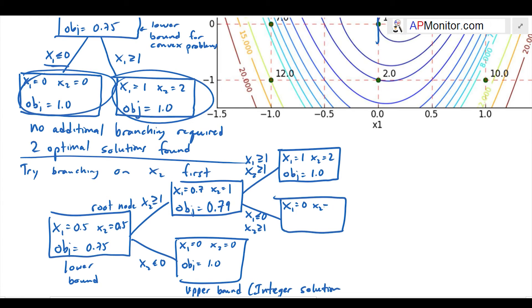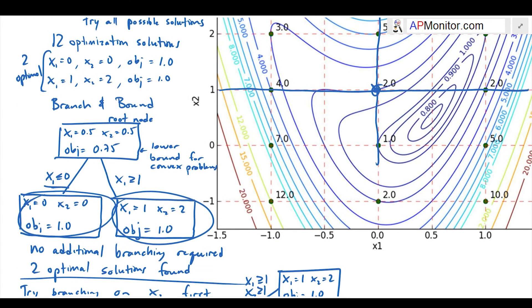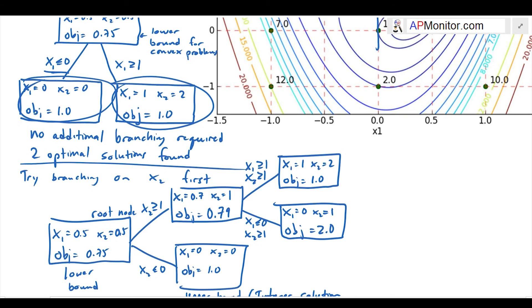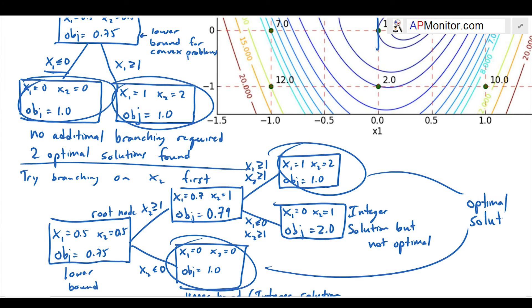This is an integer solution, but it's not optimal. So there I have my two optimal solutions. It took me a few additional evaluations in order to get that, but it's still better than the exhaustive search. Branch and bound is going to be better than exhaustive search.